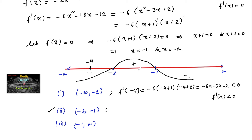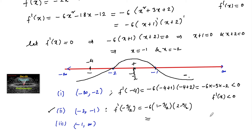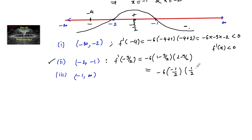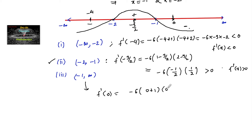In the interval (-2, -1), let's take x = -3/2. Then f'(-3/2) = -6(-3/2 + 1)(-3/2 + 2) = -6(-1/2)(1/2). Negative times negative is positive, so f'(x) is positive in the interval (-2, -1), confirming the function is increasing there. For the interval (-1, +∞), take x = 0: f'(0) = -6(0 + 1)(0 + 2) = -6(1)(2), which is clearly negative, so f'(x) is negative in (-1, +∞).